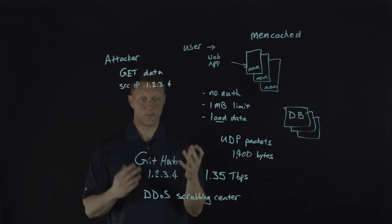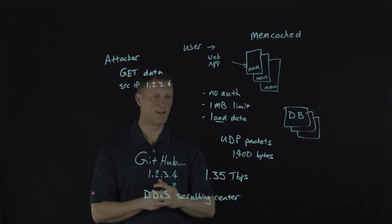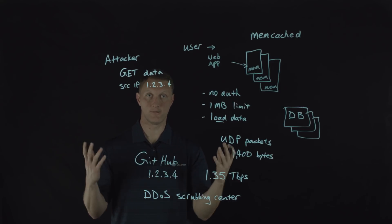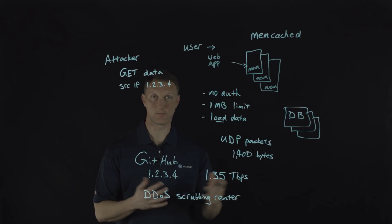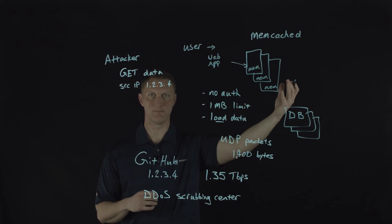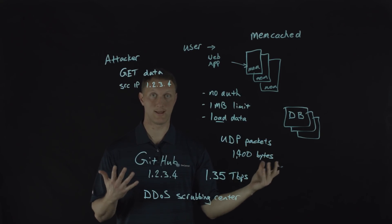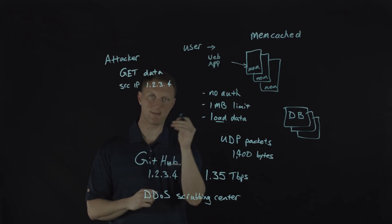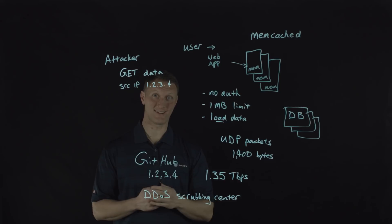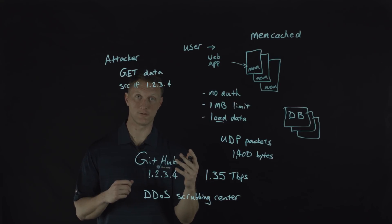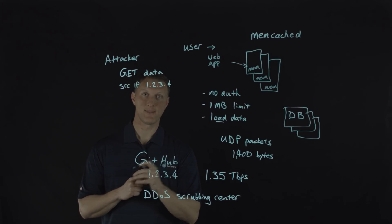That's the basics of what happened to GitHub — 1.35 terabits per second, the largest DDoS attack we've ever seen. Good for GitHub and their DDoS mitigation mechanisms; they were able to mitigate it without a huge hiccup. But there are still 100,000 of these Memcached systems exposed to the internet, so attackers could totally do this again against GitHub or some other unsuspecting victim. Be safe out there — stay alert, DDoS attacks are real and they can do a lot of damage. Thanks for watching this Lightboard lesson video.